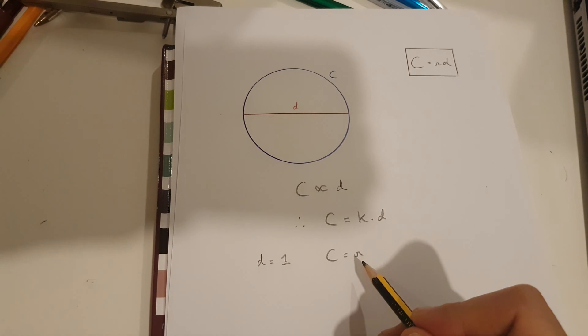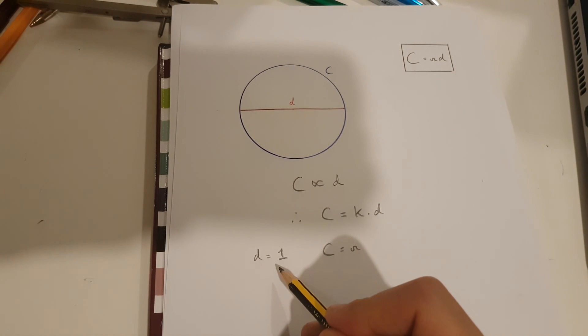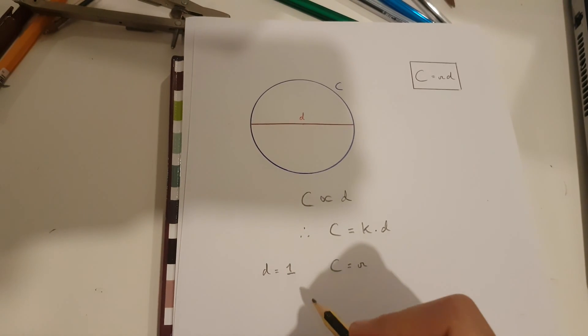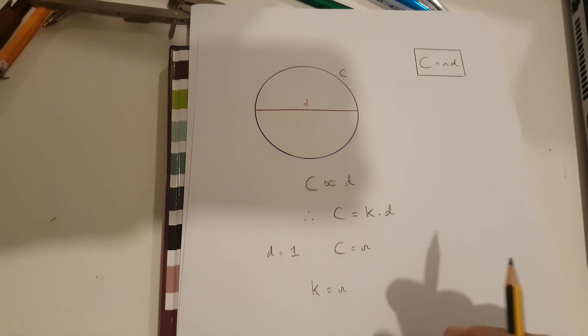If we plug pi into this c over here, and 1 into this d over here, what we get is k is equal to pi.